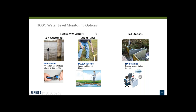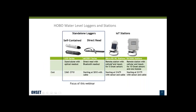We group our loggers into standalone data loggers: our self-contained U20 series loggers with optical readout, and our direct-read MX2001 series standalone loggers with Bluetooth readout in the head at the top and a water level sensor that goes down into the water. We also have some IoT stations where you can get data through the internet at any time and get alarm notifications. I'm not going to be talking too much about the IoT stations today — we're going to have a full enough webinar just talking about standalone logger deployments.